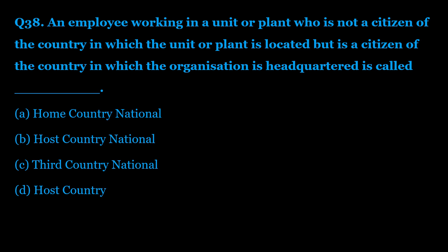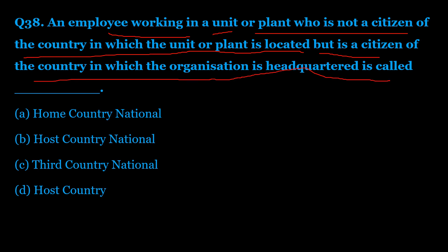Question number 38: An employee working in a unit or plant who is not a citizen of the country in which the unit or plant is located, but is a citizen of the country in which the organization is headquartered, is called — Option A: home country national. Option B: host country national. Option C: third country national. Option D: host country. The correct answer is Option A — home country national.